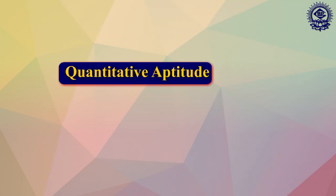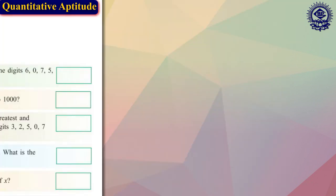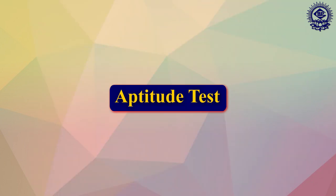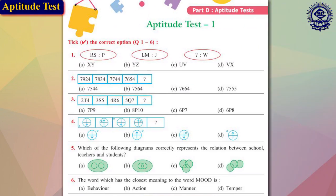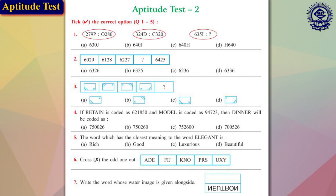Quantitative aptitude: a person with a quantitative aptitude will be in a better position to analyze and make sense of the data given. An aptitude test helps students understand their area of interest and strengths better. Aptitude tests are designed to determine an individual's skill or ability to succeed in a particular niche.